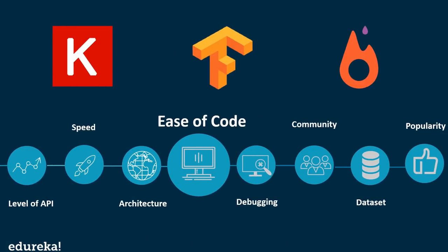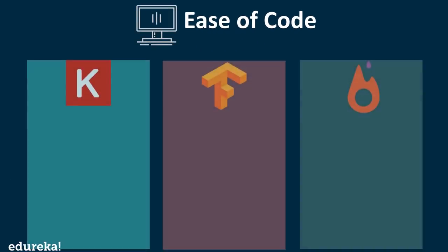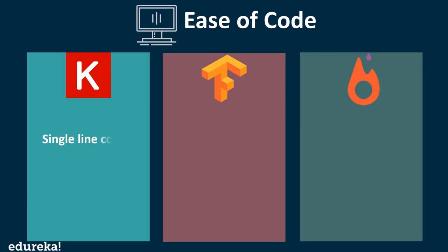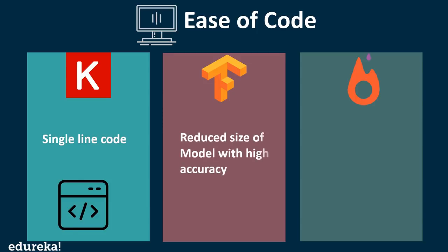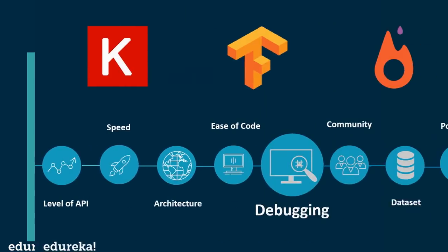The next parameter of comparison is ease of code. One advantage of using Keras is that there is a single line of code for implementing it, which makes it a preferable framework for coders. TensorFlow provides a reduced size model along with high accuracy. PyTorch consists of more lines of code and is not as simple when compared to the other two.